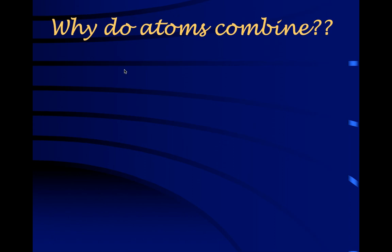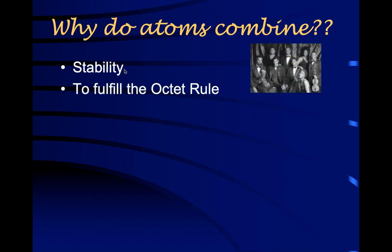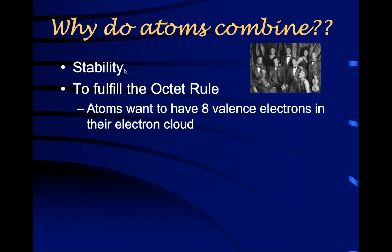Why do atoms combine? It is about stability — being stable. Think about human nature: we're made of atoms and we want to be stable. There is something called the octet rule in chemistry that has to do with eight valence electrons. The octet rule says atoms want to have eight valence electrons in their electron cloud.